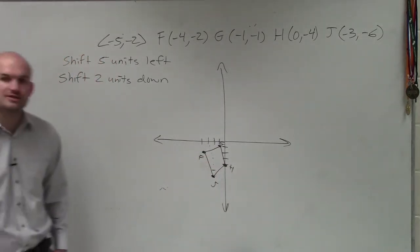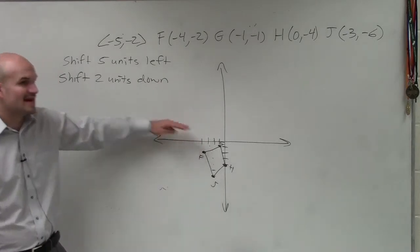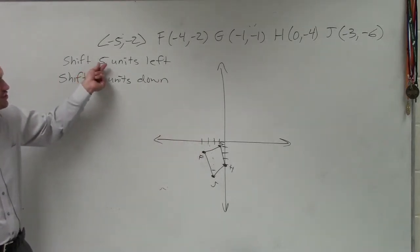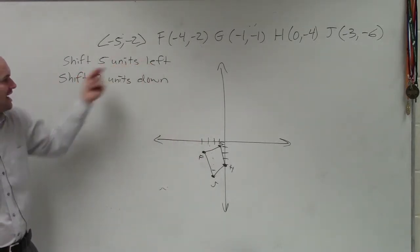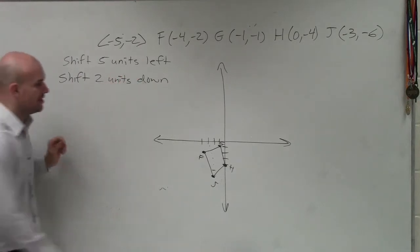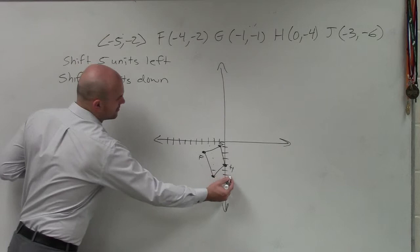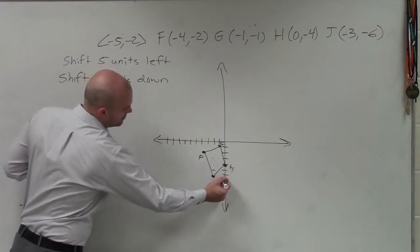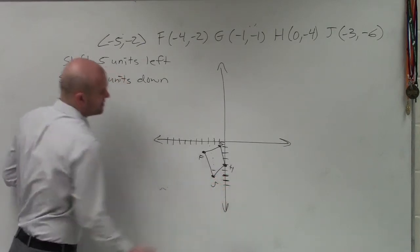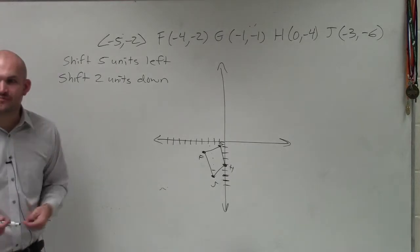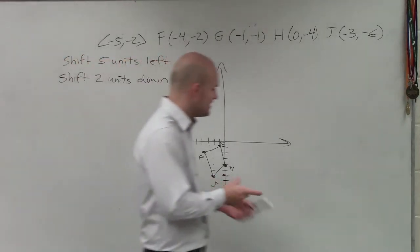Now all I simply need to do, if I take all these points and I just follow my transformations, shift every point five units to the left and two units down. All right? So ladies and gentlemen, all I'm going to do is just take every point and shift it five units to the left and then two units down and then relabel it.